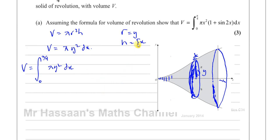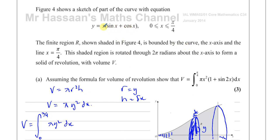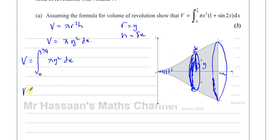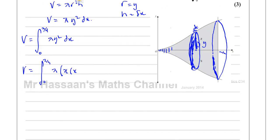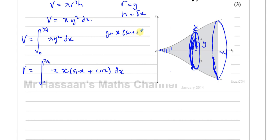We know that y equals x times (sine x plus cosine x), so we replace y with that expression. So v equals the integral from 0 to pi over 4 of pi times [x(sine x plus cosine x)] squared dx. When we square the bracket, we have pi x squared times (sine x plus cosine x) squared, which expands to pi x squared times (sine squared x plus 2 sine x cosine x plus cosine squared x) dx.